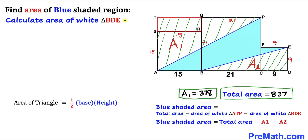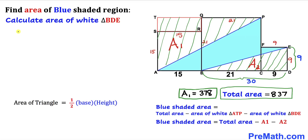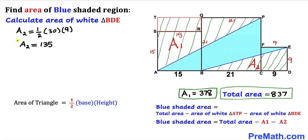Now let's calculate the area of white triangle BDE using the same triangle area formula. The base is 21 plus 9, giving 30 units, and the height is 9 units. Therefore A₂ = one half times 30 times 9, which turns out to be 135.